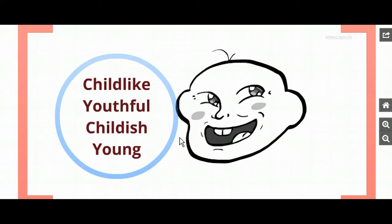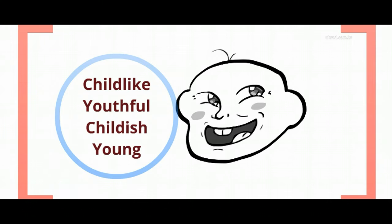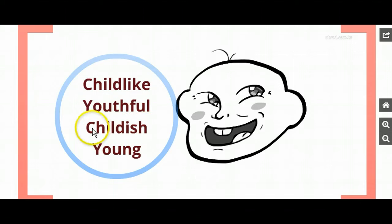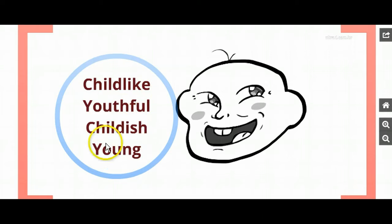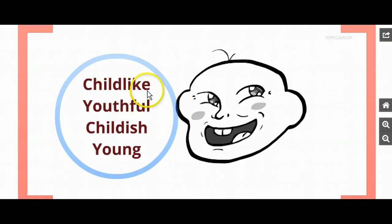What I want you to do is take a look at these words, pause the video quickly, and decide which words you think have a more positive connotation and which you believe have a more negative connotation. Hopefully you identified things like this: to most audiences, 'childish' would have a very negative connotation while 'childlike' might have a more positive connotation. 'Young' might be kind of neutral, and 'youthful' might be a more positive way of saying it. Each one of these has a different feeling associated with it.